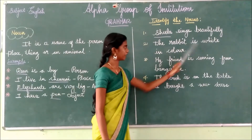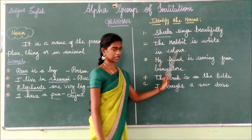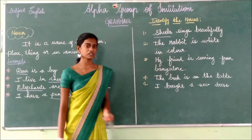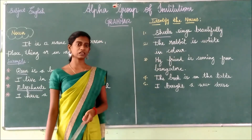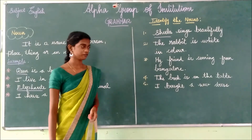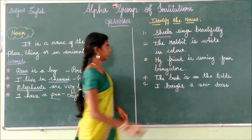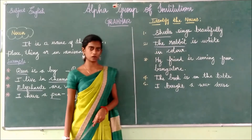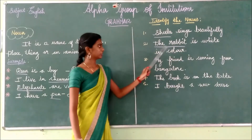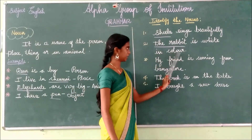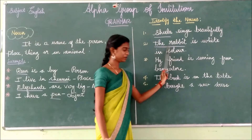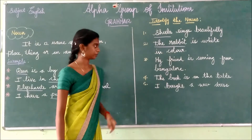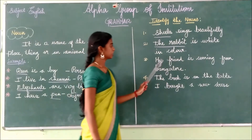Look at the second sentence: The rabbit is white in colour. What is the noun in the second sentence? Very good — the rabbit. It indicates the name of an animal. So the rabbit is the noun in the sentence because it is the name of the animal.